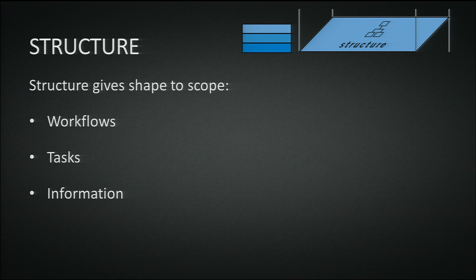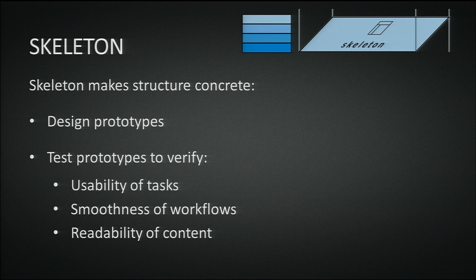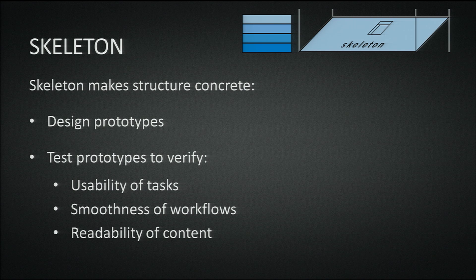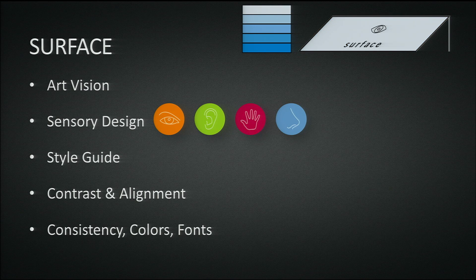Next comes the structure, where we give shape to the scope: we figure out what workflows we need, what tasks the user needs to do, and what information the user needs to get. Then we come to the skeleton — this is where it starts to get interesting. We make the structure more concrete, start doing design prototypes, and using those prototypes we verify and validate the usability of the tasks, how smooth the workflow is, and how readable the content is. And then the last bit — the surface, the aesthetics — is where we apply the art vision and put together the sensory design.